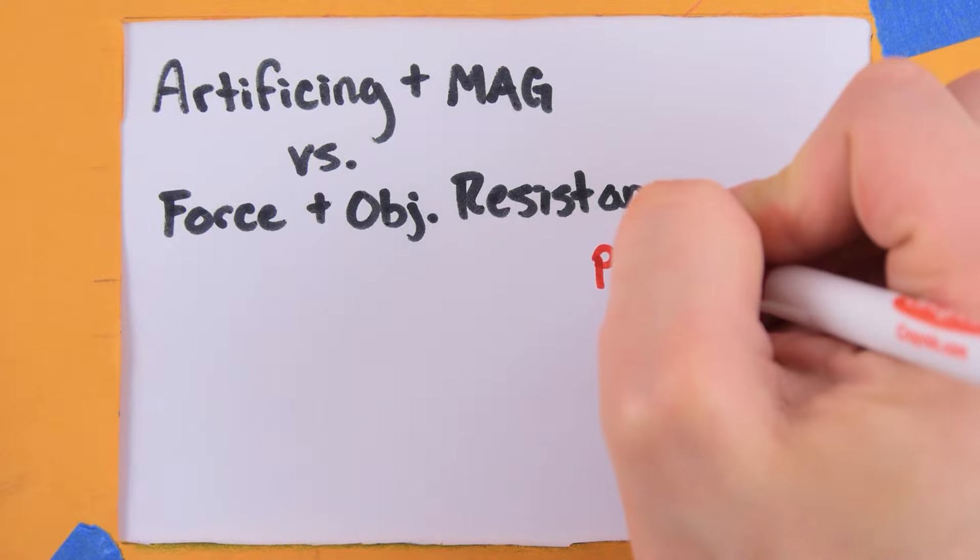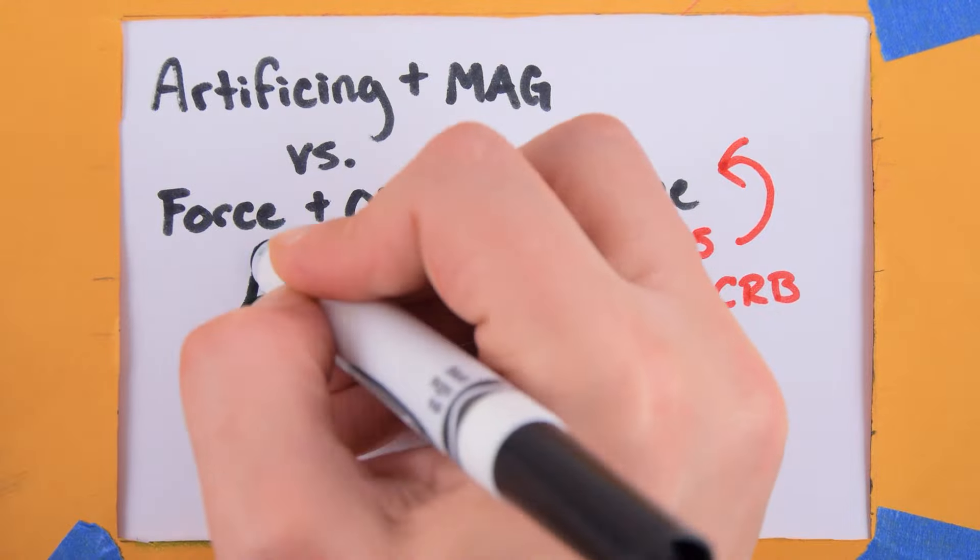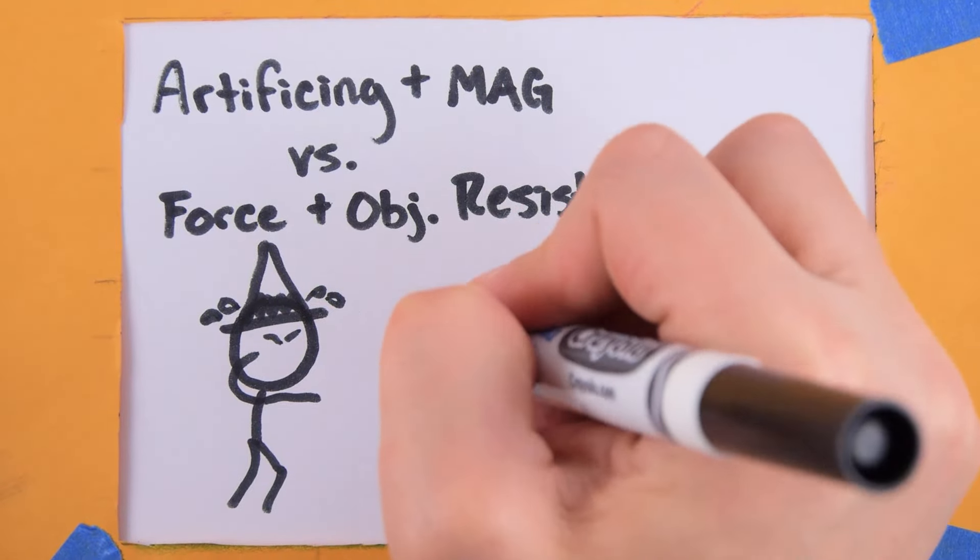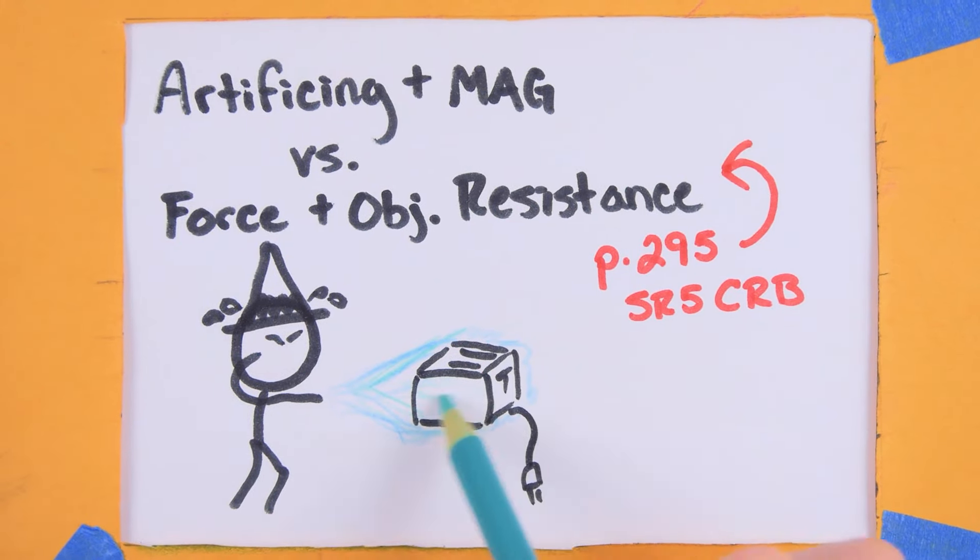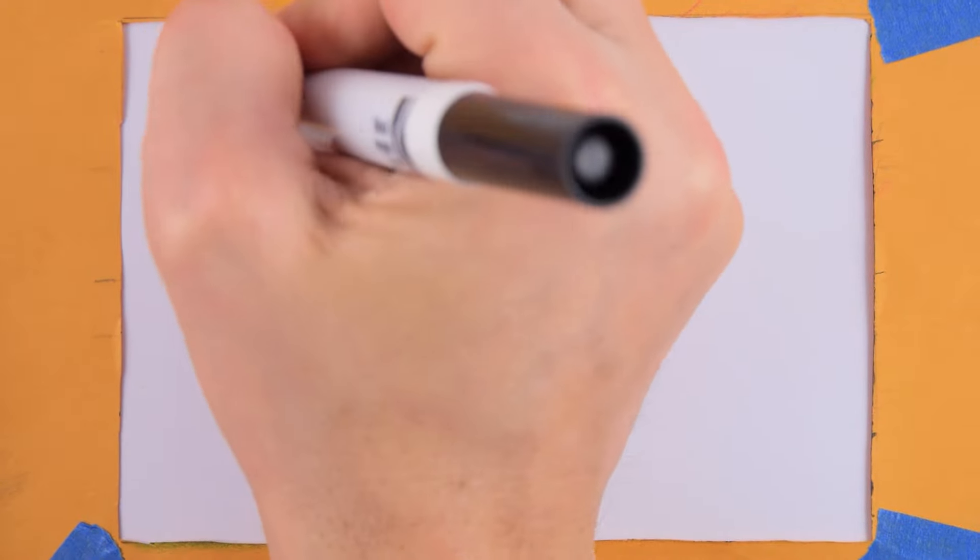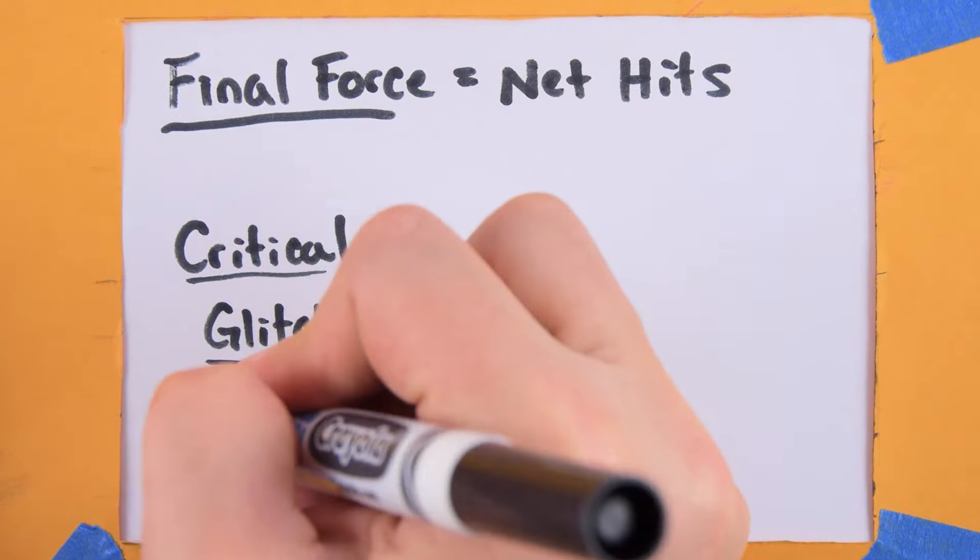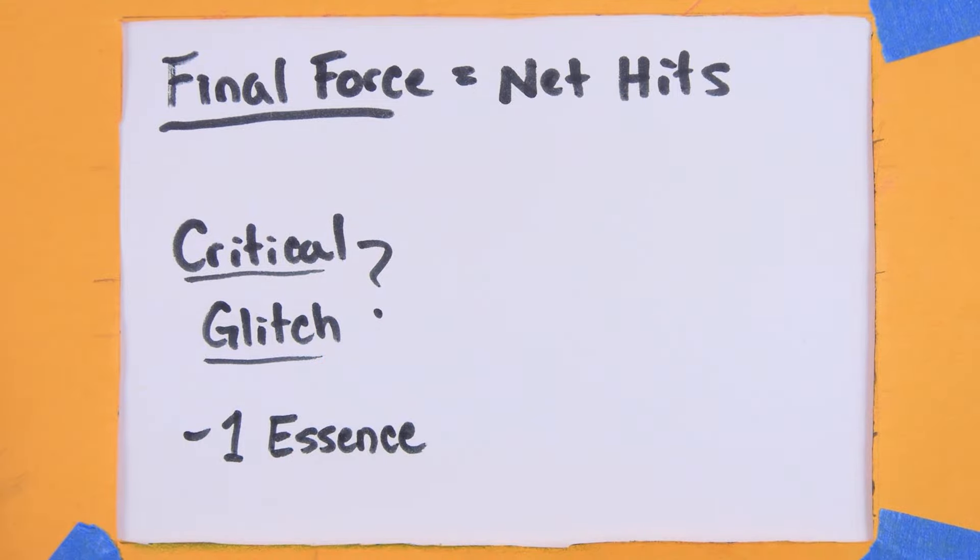That is the object resistance table found on page 295 of the SR5 core rulebook. The more complex and mechanical the object, the higher the object resistance. This is why you don't normally see enchanted cyberdecks. If you crafted your own talismah, don't forget to add the extra dice that you worked so hard to get. The focus's actual final force is equal to your net hits on this test. If you critically glitch, you permanently lose one essence.